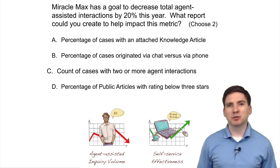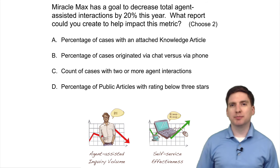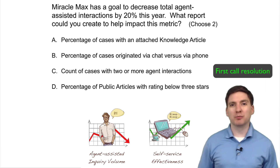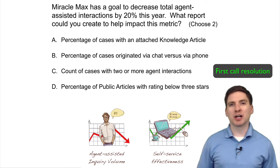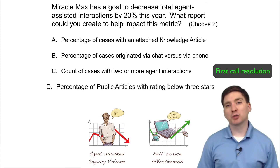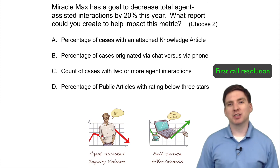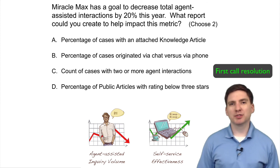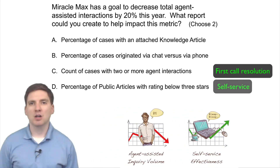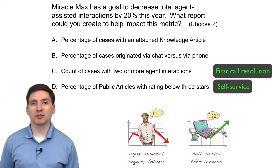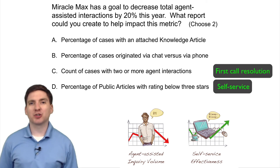The correct answers are C and D. C — count of cases with two or more agent interactions — is a good choice because that report could help Miracle Max improve his first call resolution. By investigating why those cases required more than one agent interaction and acting on that information, he can reduce total agent interactions. D — percentage of public articles with a rating below three stars — provides an indication of public knowledge base quality. Articles getting rated one or two stars are not solving customer issues, so improving the average star rating should correlate to a decrease in agent-assisted interactions.